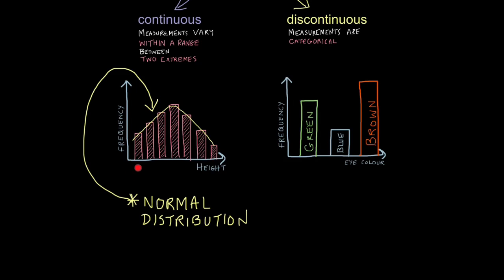Now imagine over here a shorter end of the spectrum, here a taller end of the spectrum. And what you can see, there's generally less very short people and fewer very tall people, with most people being average height. This is what I mean by measurements vary within a range between two extremes.